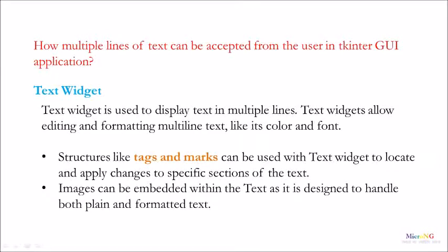To accept multiple lines of text in Tkinter GUI, we have a widget named the Text widget. The Text widget is used to display text in multiple lines. It allows editing and formatting multiple lines of text, like its colors and fonts. Structures like tags and marks can be used with the Text widget to locate and apply changes to specific sections of the text.